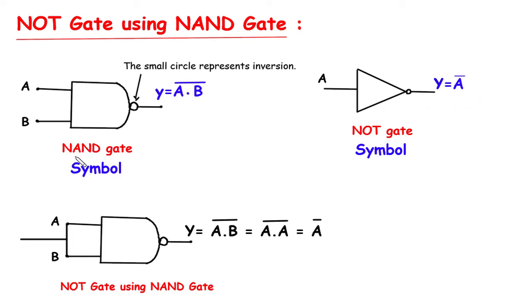Now this NAND gate is a universal gate. It is called universal gate because any basic gate can be implemented using universal gate. We can make OR gate using NAND gate, NOT gate using NAND gate, and AND gate using NAND gate.